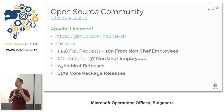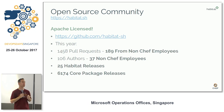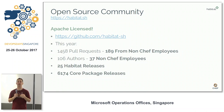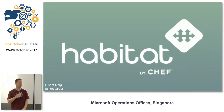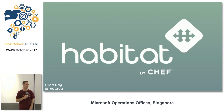Habitat is completely open source, Apache licensed, which means you can do whatever you want with it. It's up on GitHub with a lot of active development from the community. We've got 189 pull requests from non-Chef employees, 37 non-Chef employees contributing, and over 6,000 core package releases this year. So that's Habitat.